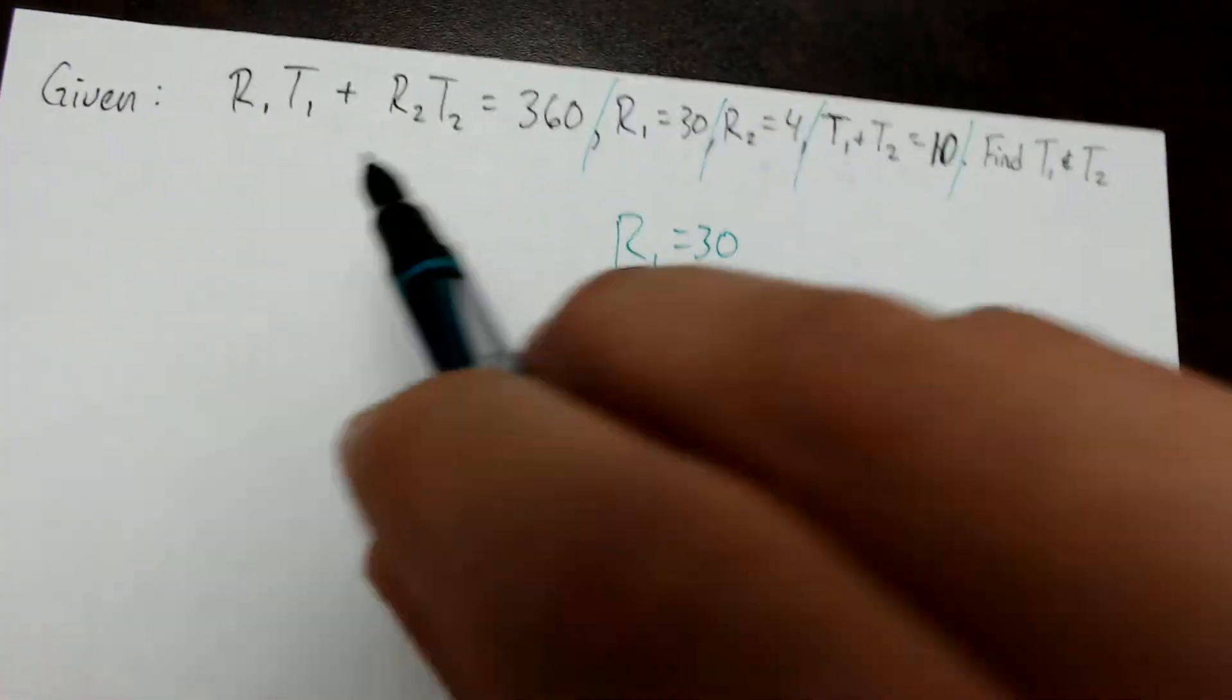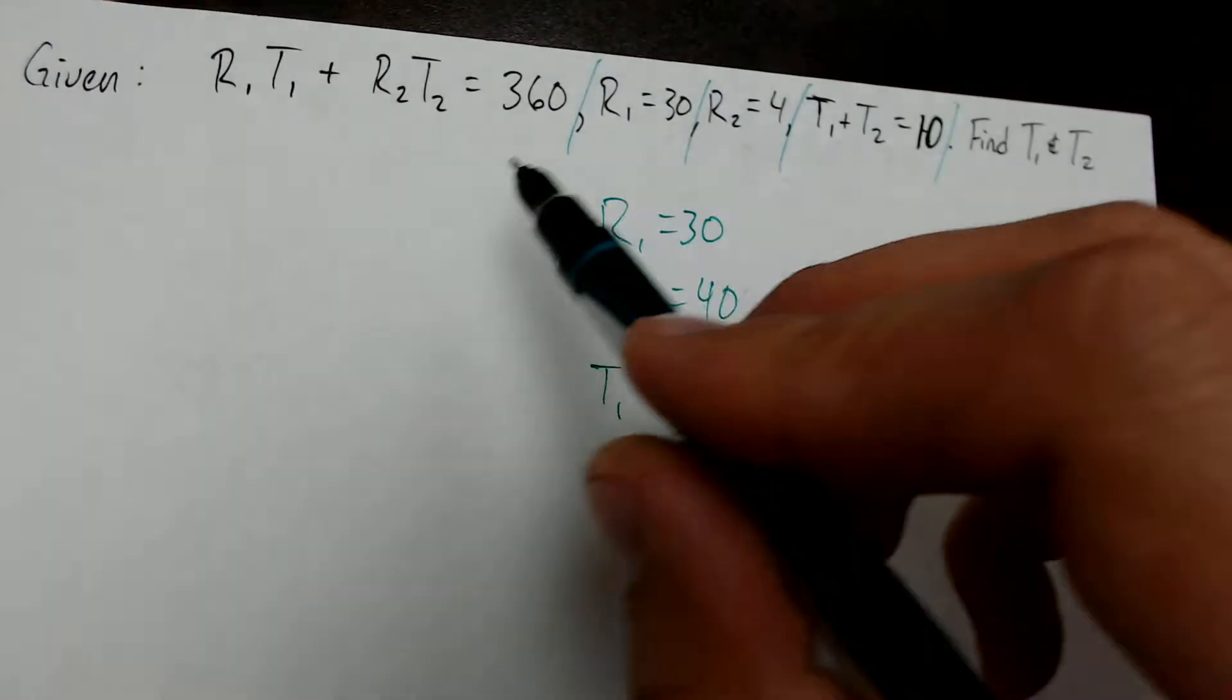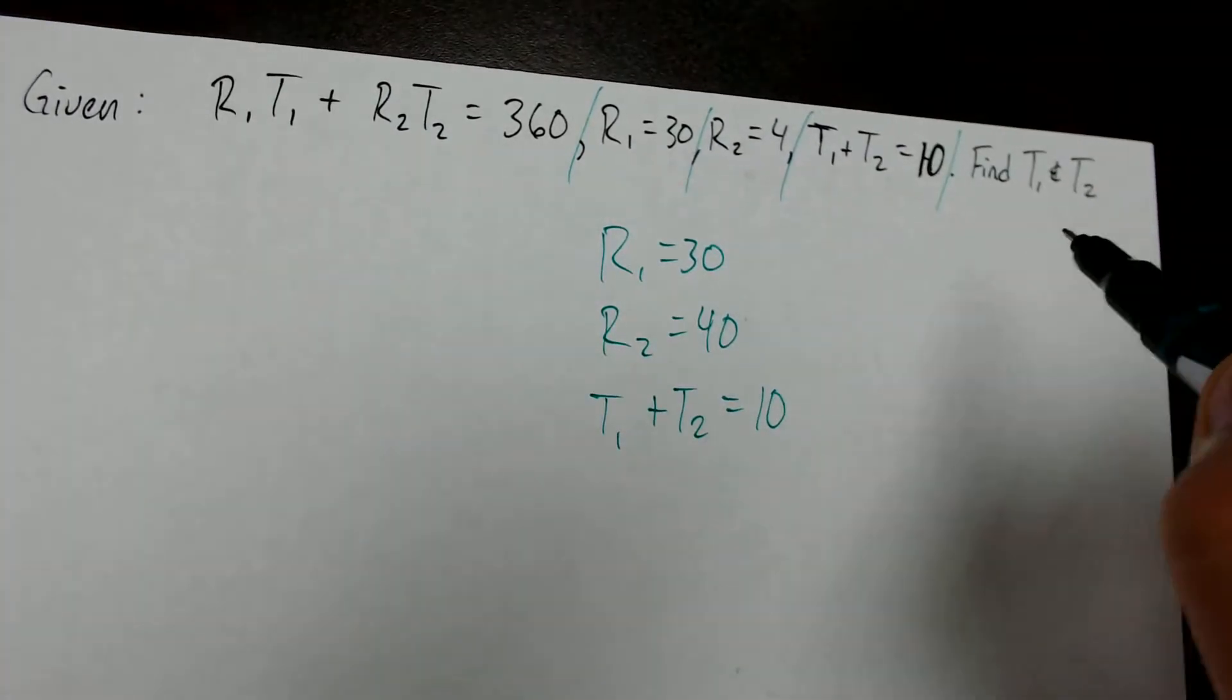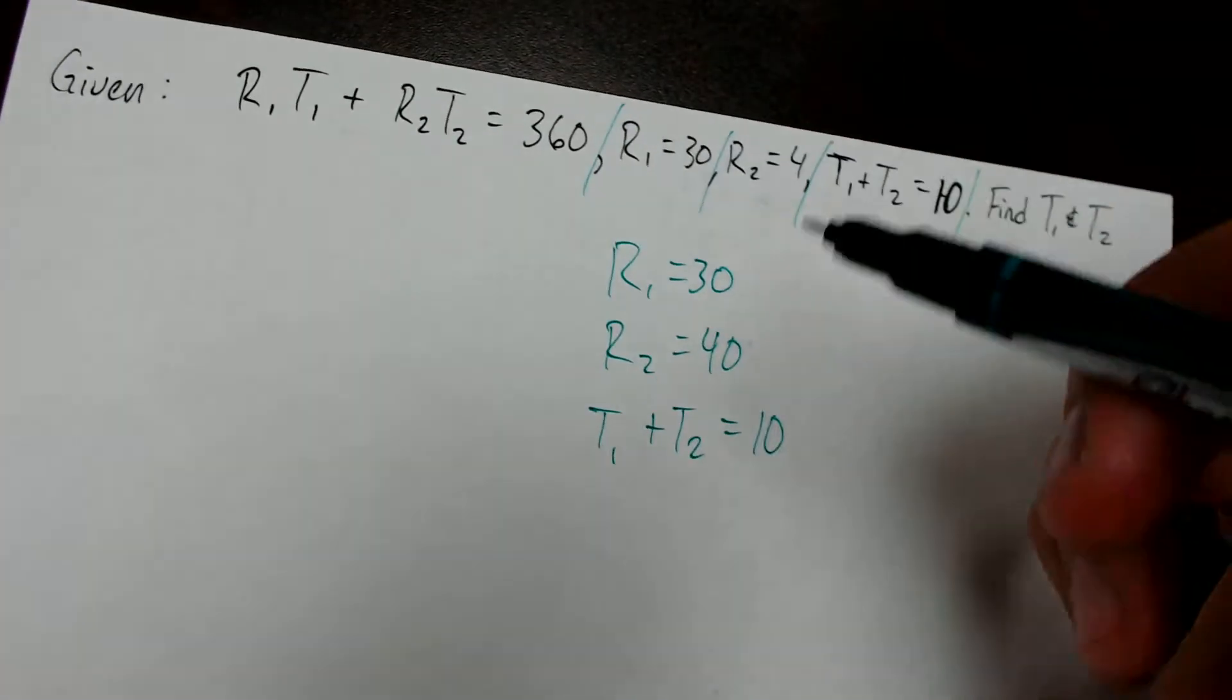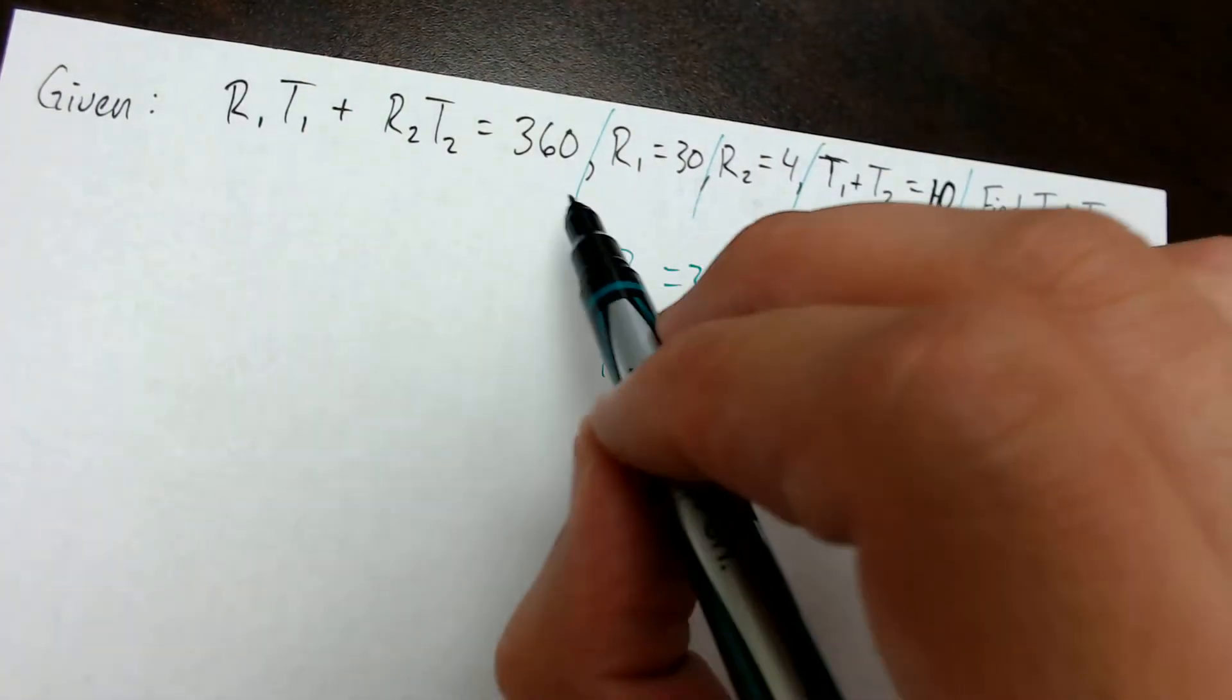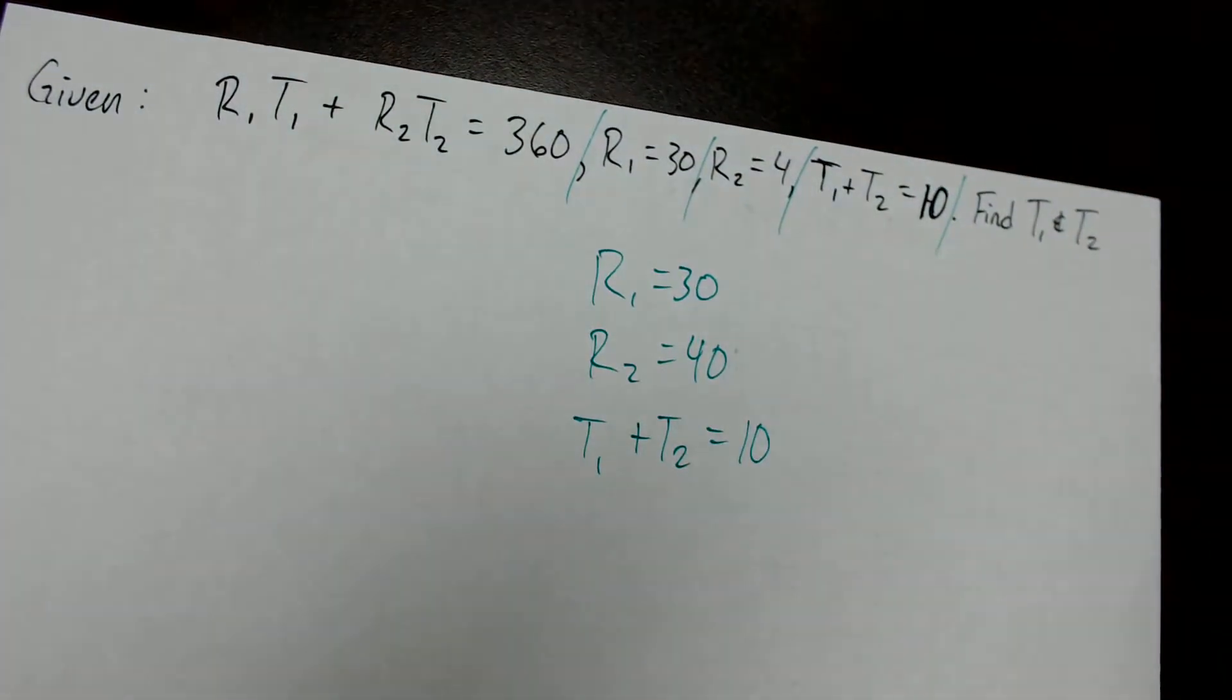First, we've got to learn how to read this and separate the information, looking for the commas, and not being overwhelmed by the massive block of letters and numbers. Then we have to figure out how we can solve for T1 and T2. This first equation is always going to be the most important equation. That's the one you're going to want to substitute into.